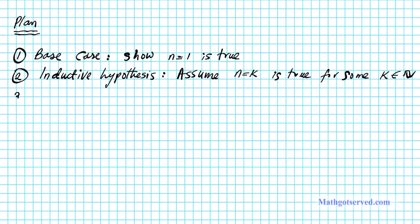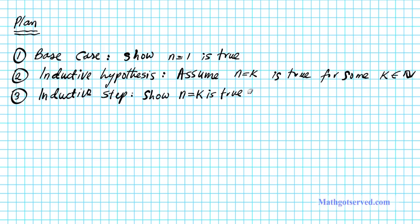The third portion, which is the longest and most complicated, is the inductive step. For the inductive step, we have to show that n equals k being true by assumption implies that the next step, n equals k plus 1, is also true. This is our plan of attack that we're going to use to carry out the proof.